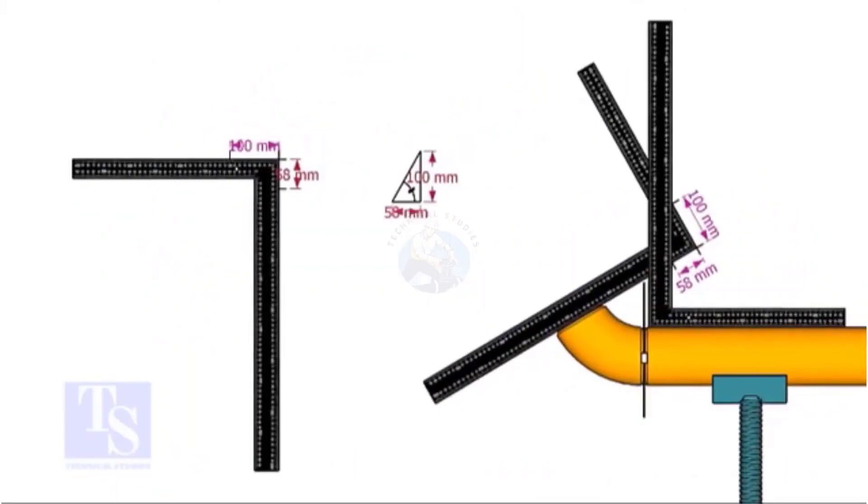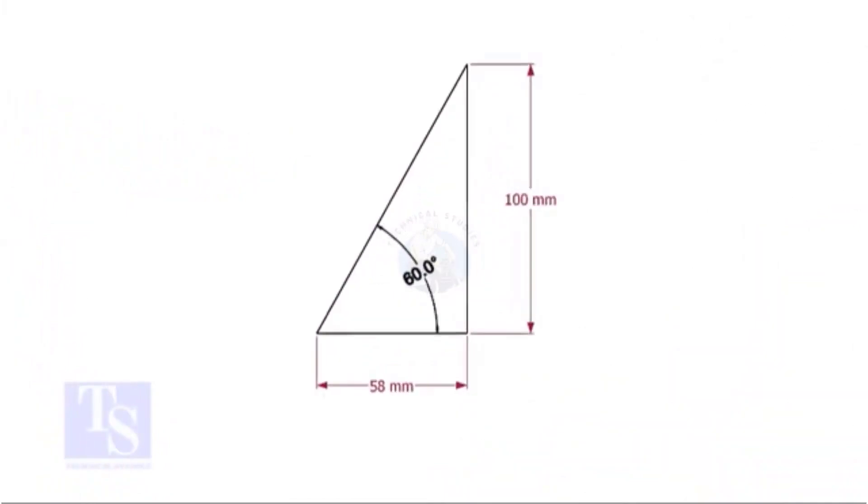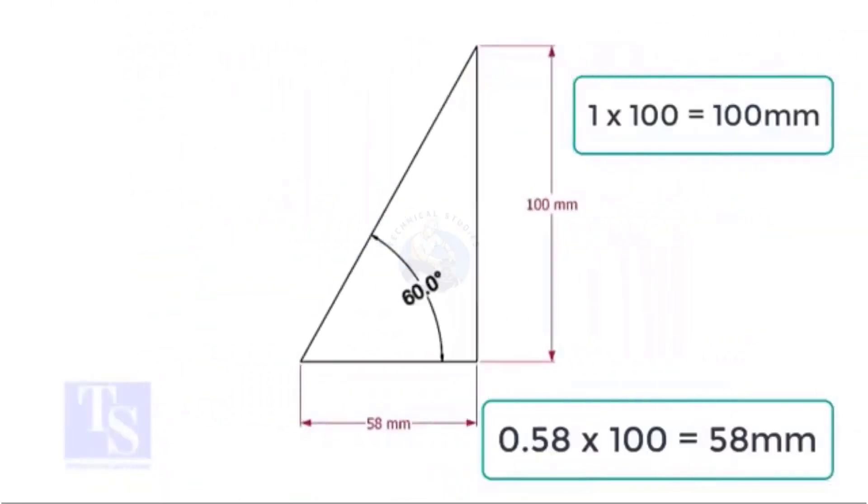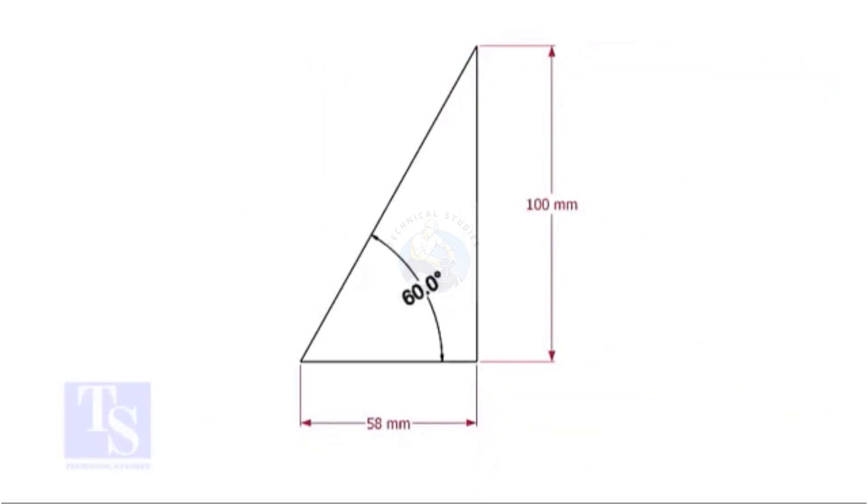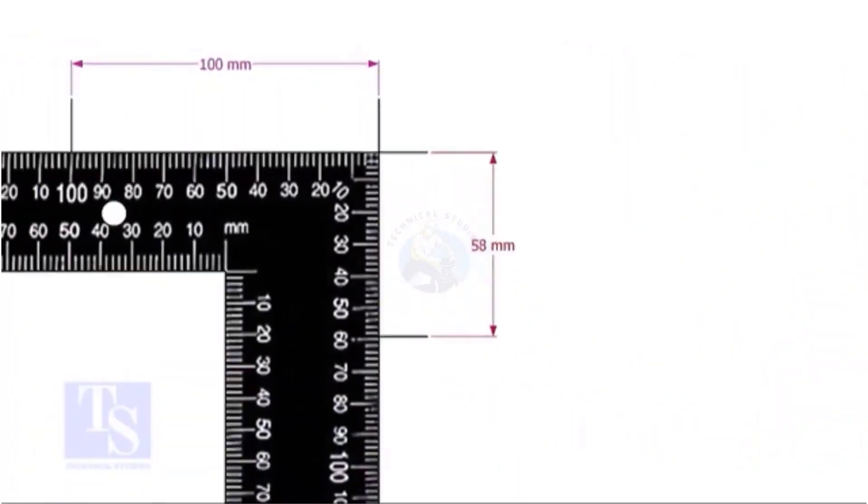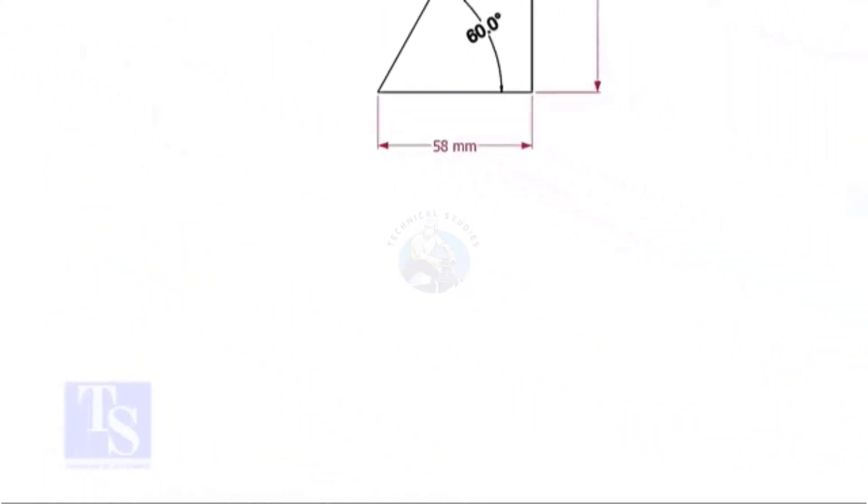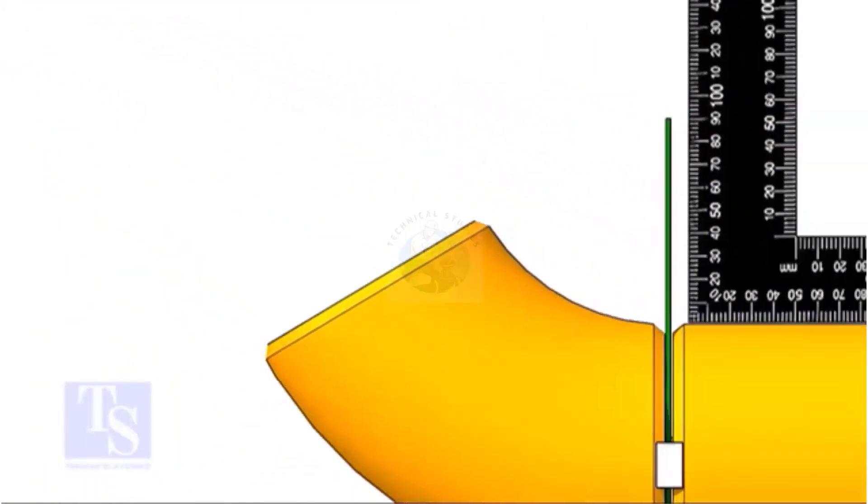For the 60 degree elbow, the set and the run ratio is 1 is to 0.58. Mark the set and the run dimensions on the right angle and follow the previous exercise.